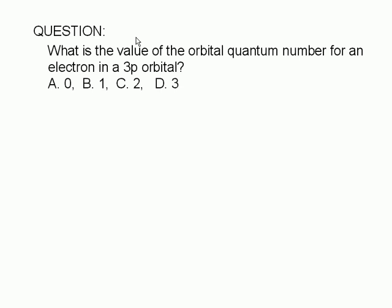What is the value of the orbital quantum number for an electron in a 3p orbital? A. 0, B. 1, C. 2, or D. 3.